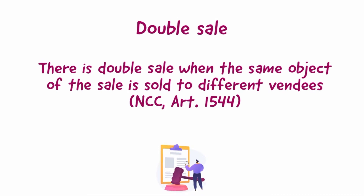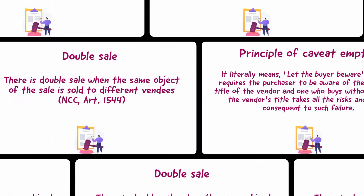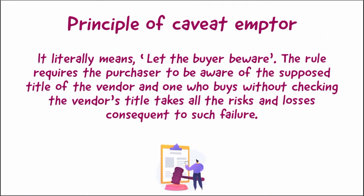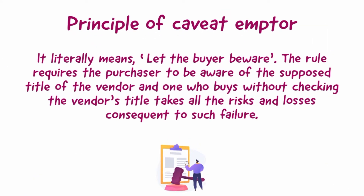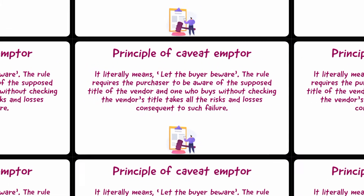Double sale: there is double sale when the same object of the sale is sold to different vendees. Principle of caveat emptor — it literally means 'let the buyer beware.' The rule requires the purchaser to be aware of the supposed title of the vendor, and one who buys without checking the vendor's title takes all the risks and losses consequent to such failure.